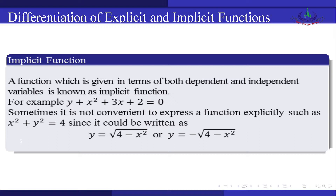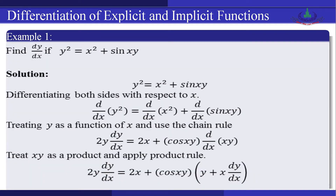Sometimes it is not convenient to express a function explicitly. For example, x² + y² = 4 could be written as y = √(4 − x²) or y = −√(4 − x²). Since we have two explicit forms, it is not in a single explicit form, so it is called an implicit function.